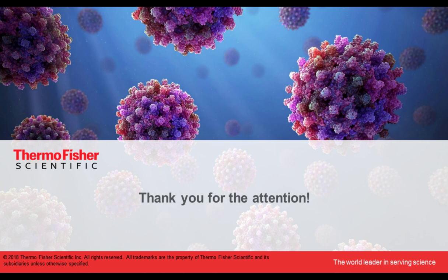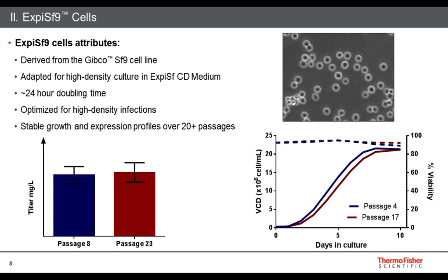For XPSF9 cells, we recommend a passaging schedule of 3-4 days. When seeded at 0.5 million, cells should reach above 5 million by day four. When seeded at 1 million, they should exceed 5 million in three days. For the first one or two passages after thawing, you may see a slightly different schedule as cells recover, but past passage two you should see very consistent kinetics.